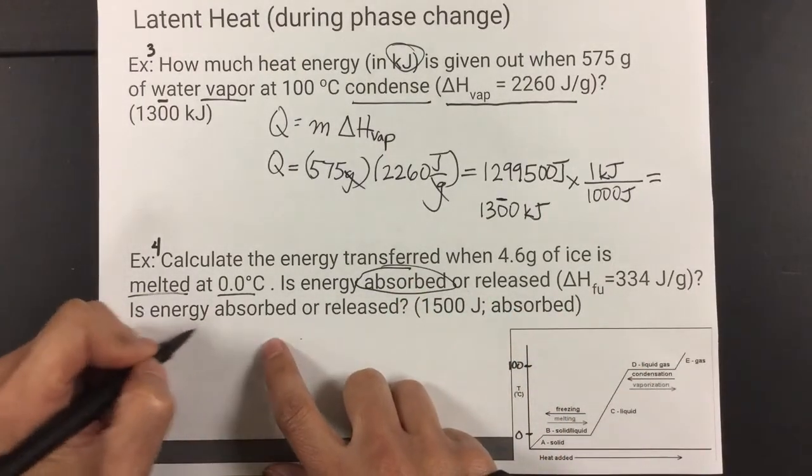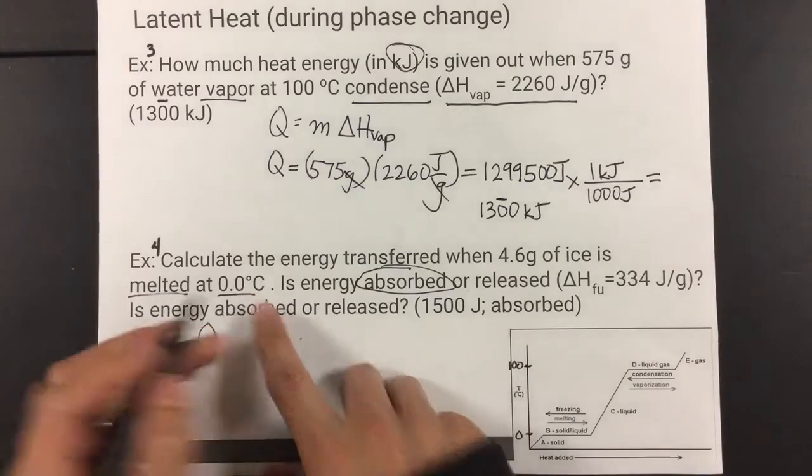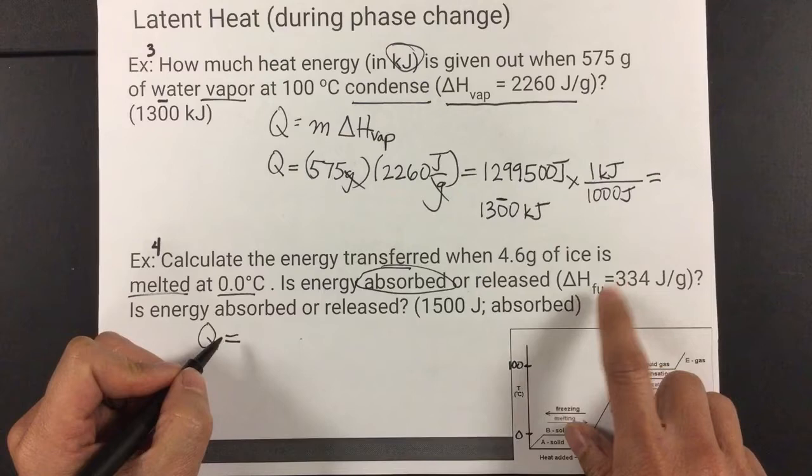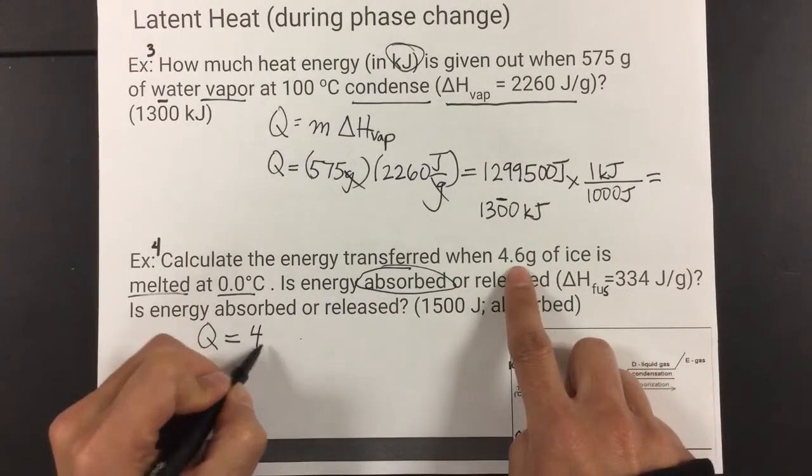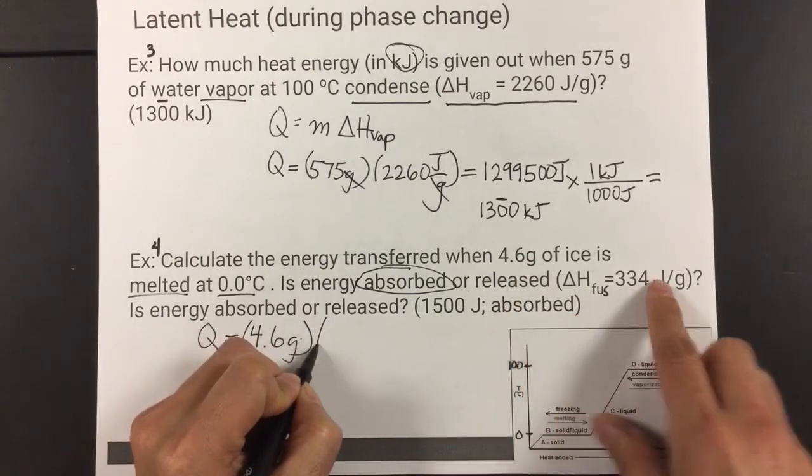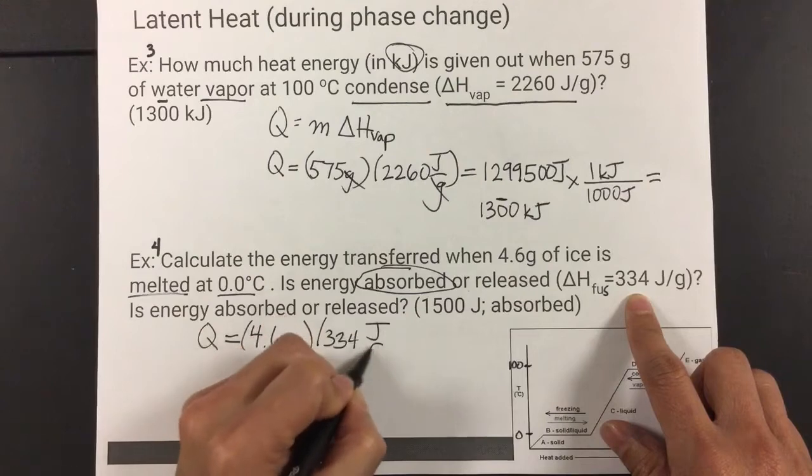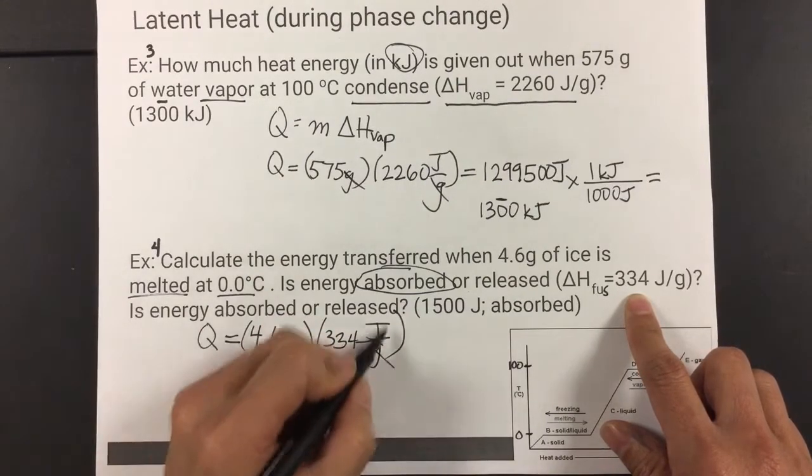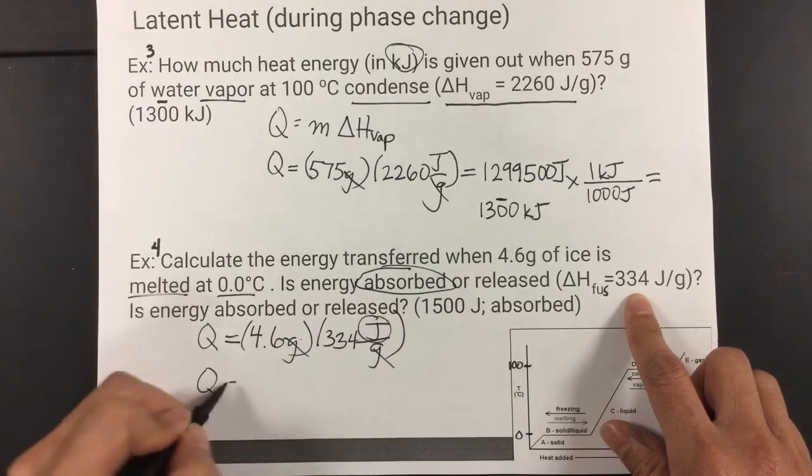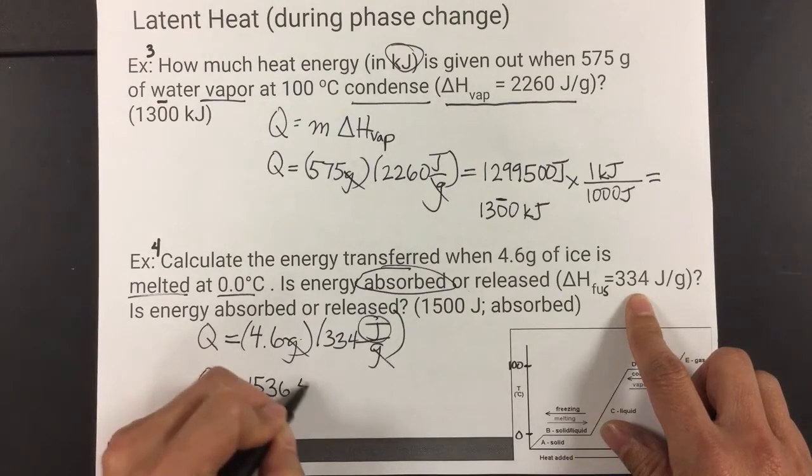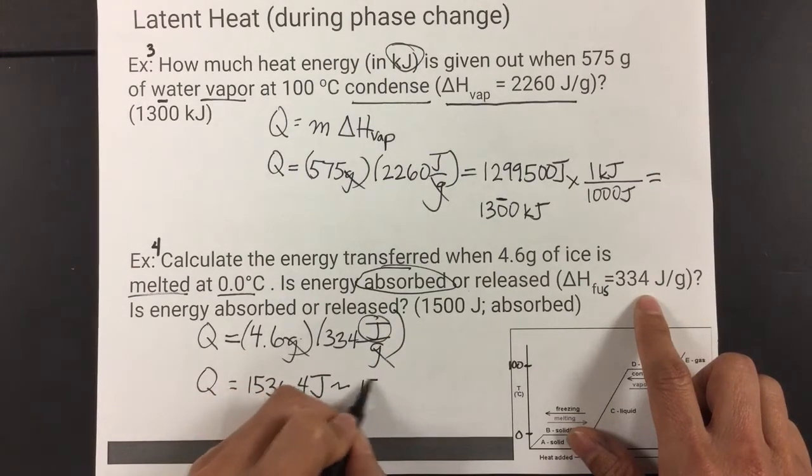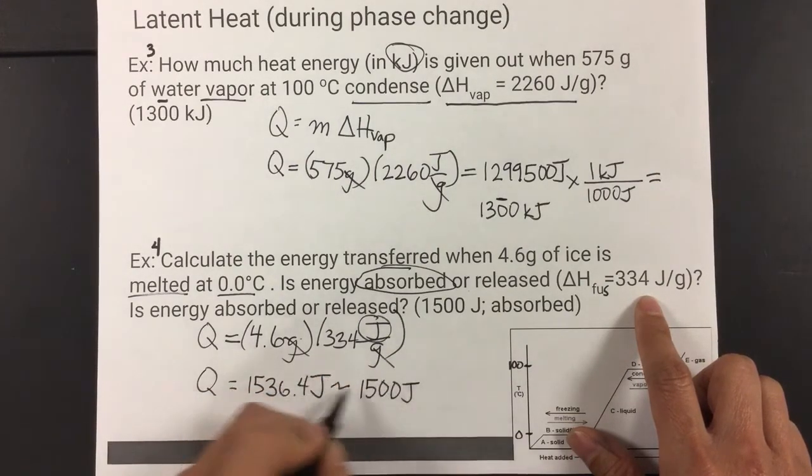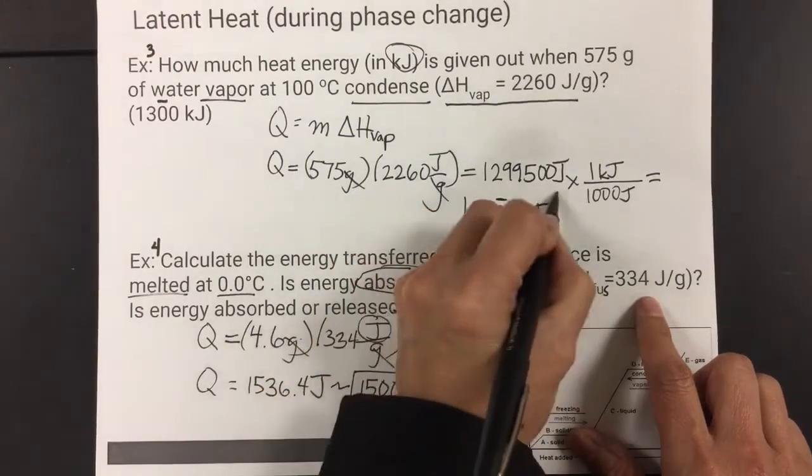So, again, since we see the word melted and it's at the same temperature, we know that we're looking at ΔH of fusion. So, here we have mass, which is 4.6 grams. We multiply it times 334 joules per gram. Grams cancels out. You're left with joules. Q equals. I get an answer of 1,536.4 joules. And then, of course, sig figging that. I only need two sig figs. So, it's 1,500 joules in the end. So, here are my answers in the end.